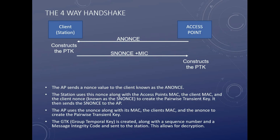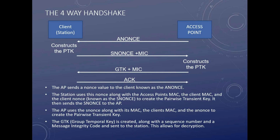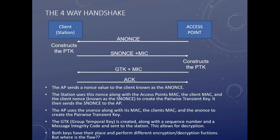The access point then takes it a step further — it creates what we call the GTK, the Group Temporal Key. It sets up a sequence number and sends a Message Integrity Code back to the station, which allows for encryption and decryption when dealing with broadcast data. The station acknowledges receipt and the four-way handshake is complete. Each key — the PTK and the GTK — has its own purpose, but the GTK is the one we're going to keep our eye on.